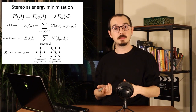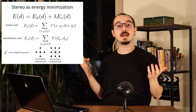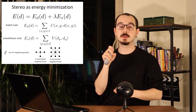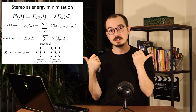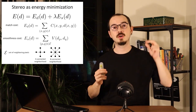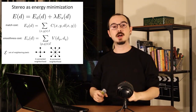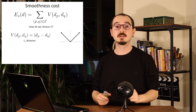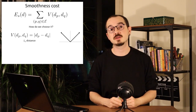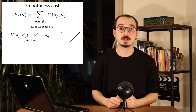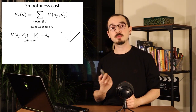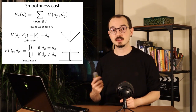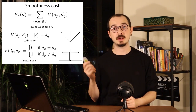We can define neighboring pixels as a four-connected or eight-connected neighborhood. In four-connected, we ensure disparity is similar to up, down, left, and right neighbors. In eight-connected, we look at all surrounding pixels. The smoothness cost can be defined in various ways, and different algorithms choose different formulations depending on performance or application. One popular choice is the L1 distance — the absolute difference between two disparity values — and another is the Potts model.